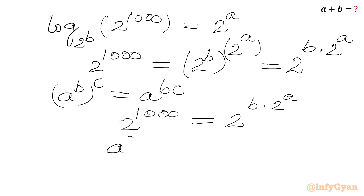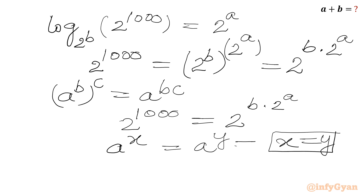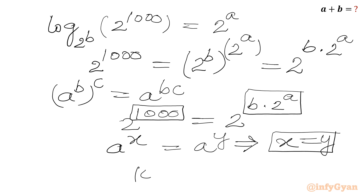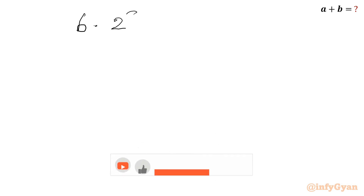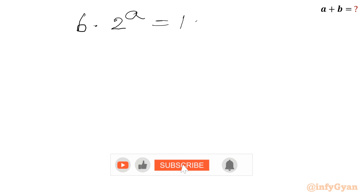Now, since the bases are equal, if a^x equals a^y then x must equal y. So we can write 1000 must be equal to b times 2^a, or b · 2^a equals 1000.